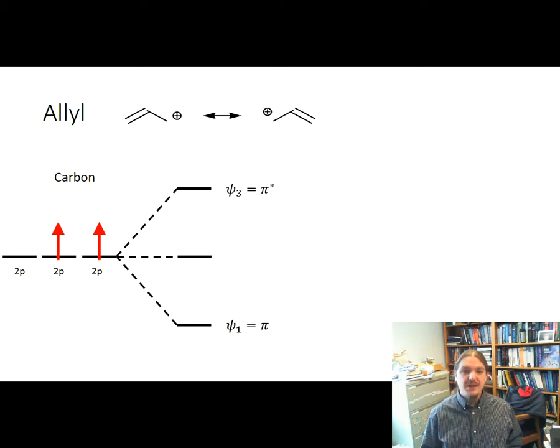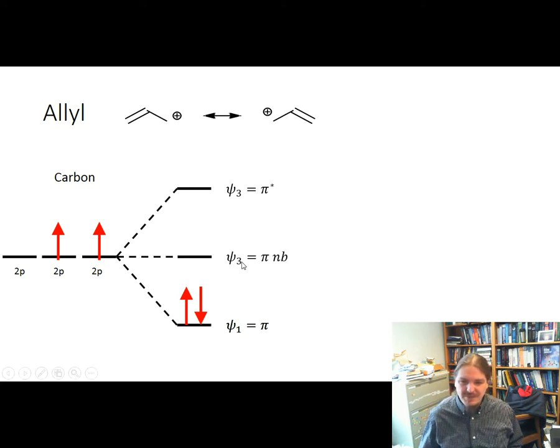There are three carbon atoms. Each of those three carbon atoms has a p orbital, but because it's a cation, there are only two electrons in the system. Okay. And I have a typo here. This should say psi 2. So I apologize for that, but both electrons go into the lowest energy orbital, which is a bonding orbital.